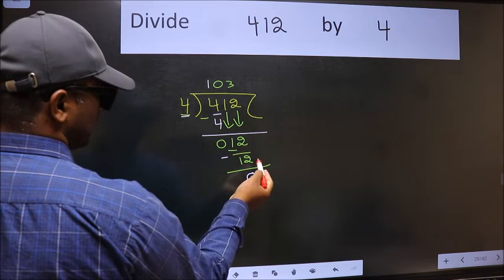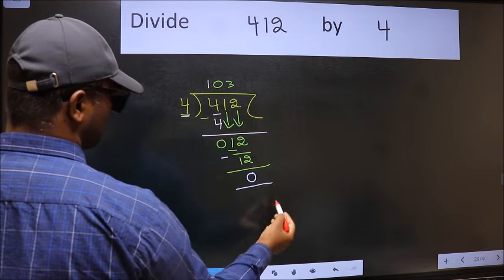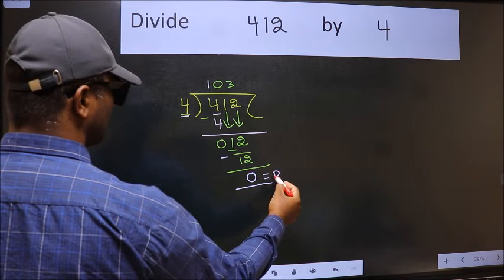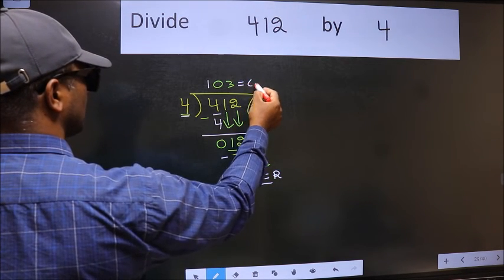No more numbers to bring it down, so we stop here. This is our remainder and this is our quotient.